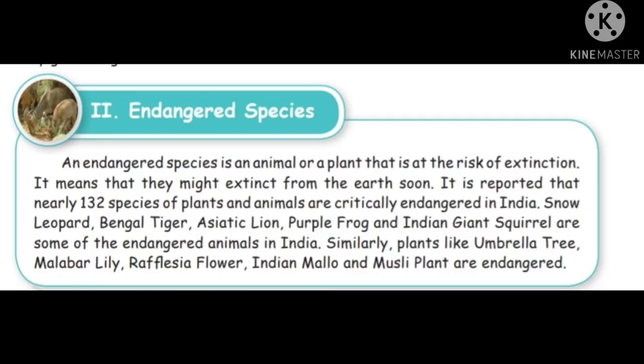Examples of endangered animals in India include the Snow Leopard, Bengal Tiger, Asiatic Lion, Purple Frog, and Indian Giant Squirrel. Similarly, endangered plants include the Ambala tree, Malabar Lily, Rafflesia Flower, Indian Mallow, and Muscle Plant.